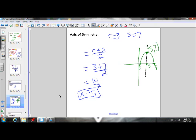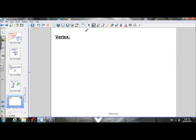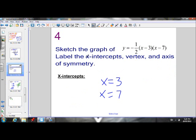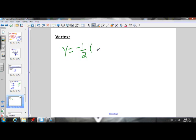We don't yet know the y value of this vertex. It could be anywhere on this line. Let's go ahead and figure out where exactly on that line it is. So we know the equation of our quadratic is negative 1 over 2 times x minus 3 times x minus 7.